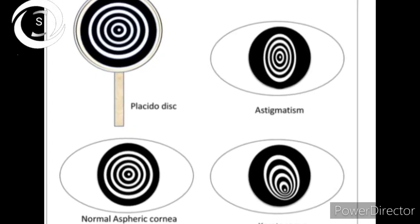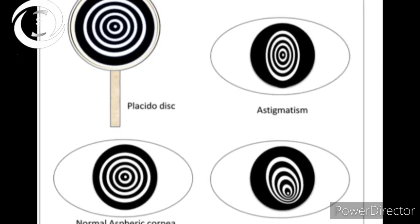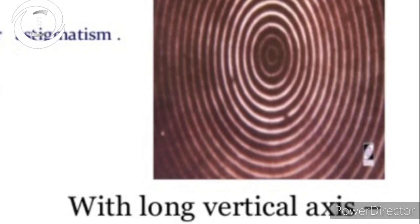But sometimes rings are not spherically enlarged or compressed, they are oval. That shows astigmatism. If a long vertical axis image is formed, it shows rings are widely spaced at vertical meridian and more compact at horizontal meridian.